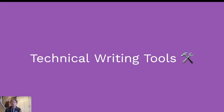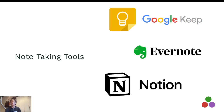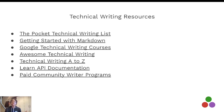There are various tools in technical writing to get you started. For research tools, you have Google, Stack Overflow, Bing, Reddit, and Quora. For note-taking tools, you have Google Keep, Evernote, Notion, and Google Docs. For publishing tools, you have Dev.to, which is quite popular among developers, Hashnode, and Medium. We also have our Julia forum community, where you can publish your articles. These are technical writing resources that can help you get started or improve your technical writing skills.